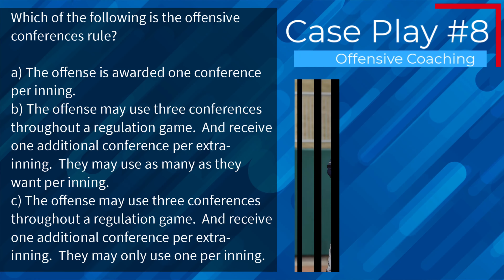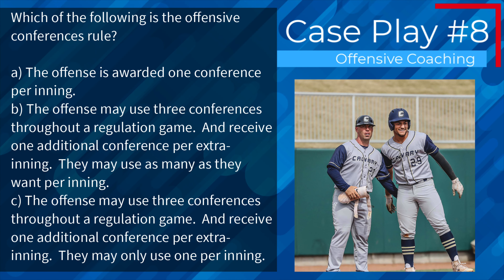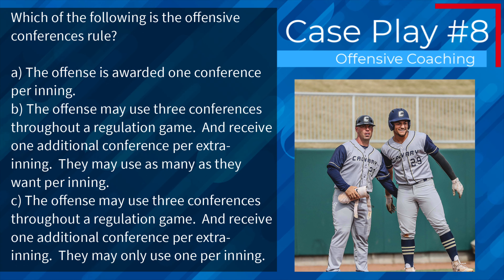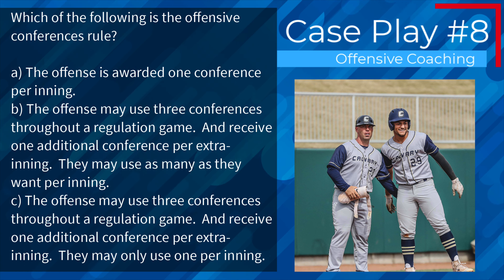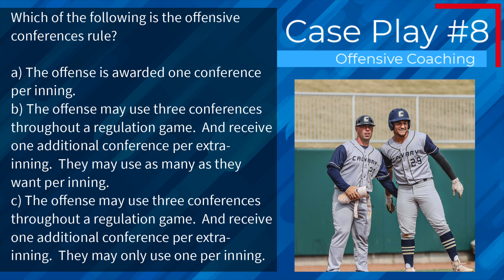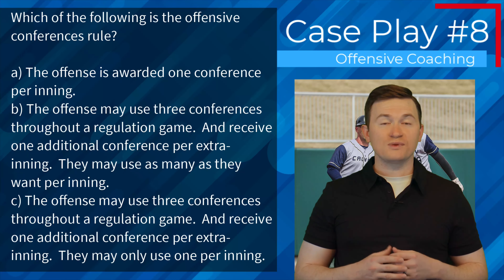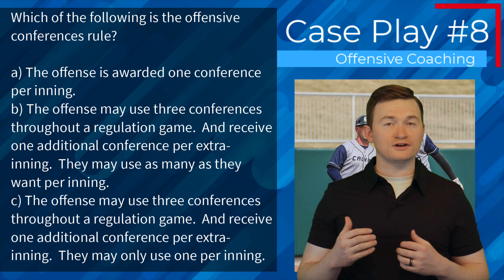Case play number ten: which of the following is the offensive conference rule? A, the offense is awarded one conference per inning; B, the offense may use three conferences throughout a regulation game and receive one additional conference per extra inning, and may use as many as they want per inning; or C, the offense may use three conferences throughout a regulation game and receive one additional conference per extra inning, but may only use one per inning? The correct answer is A — the offense is awarded one conference per inning.